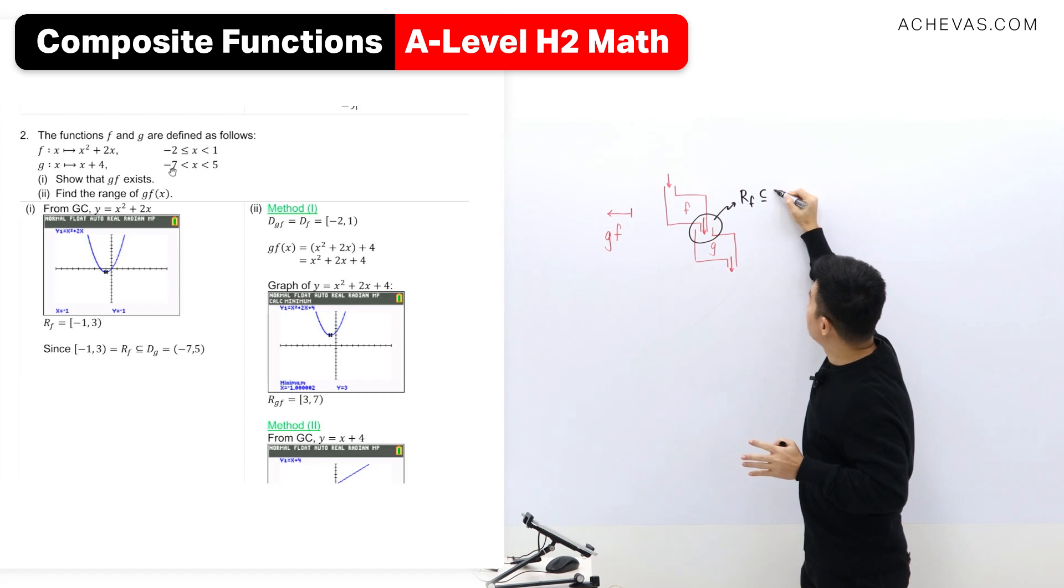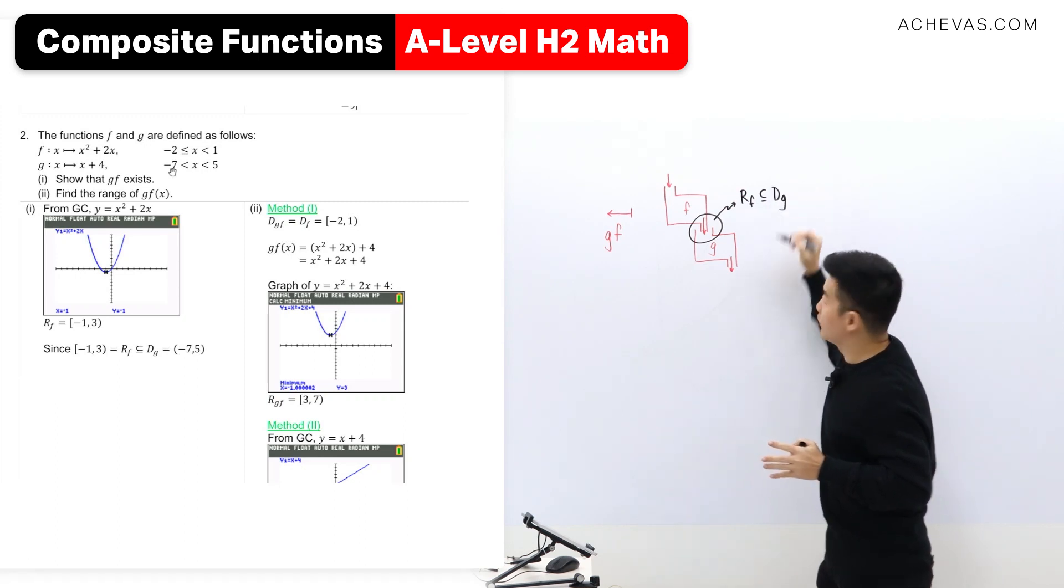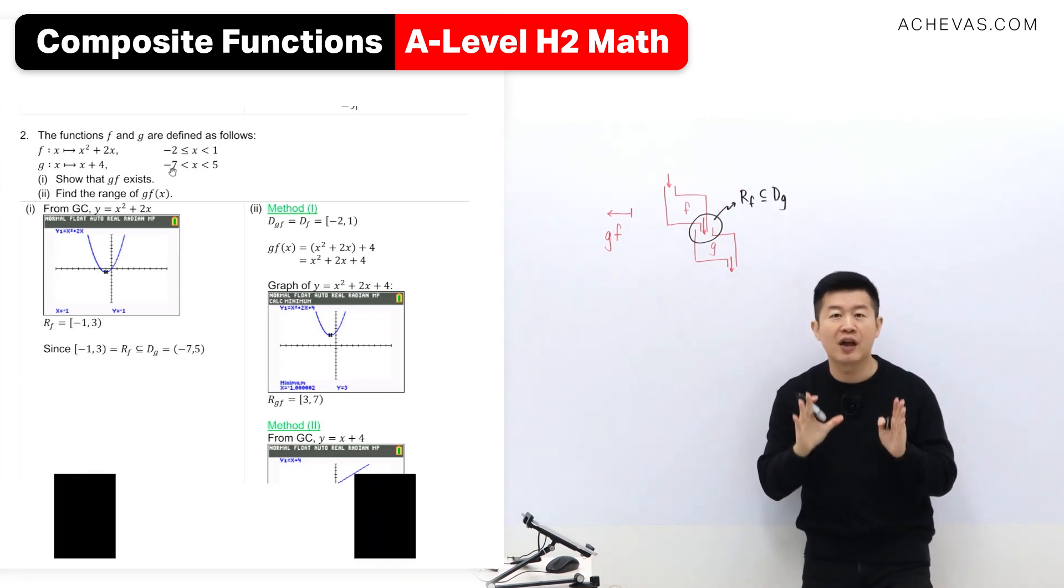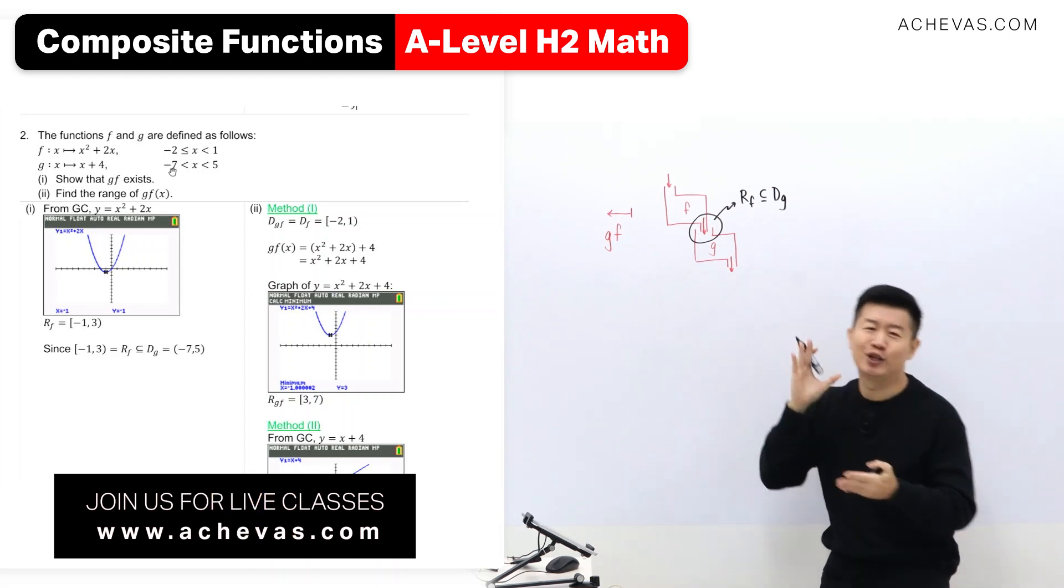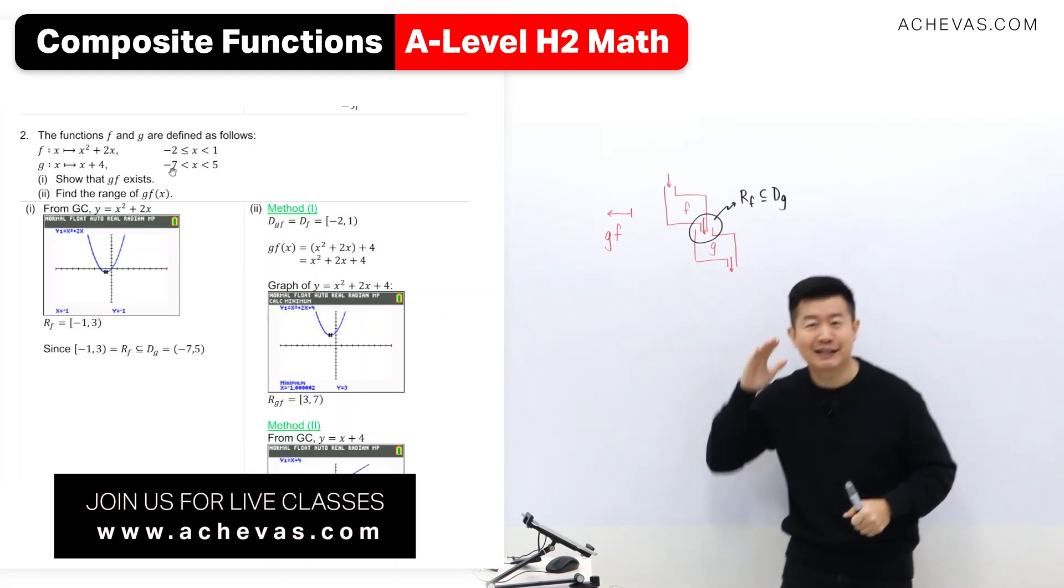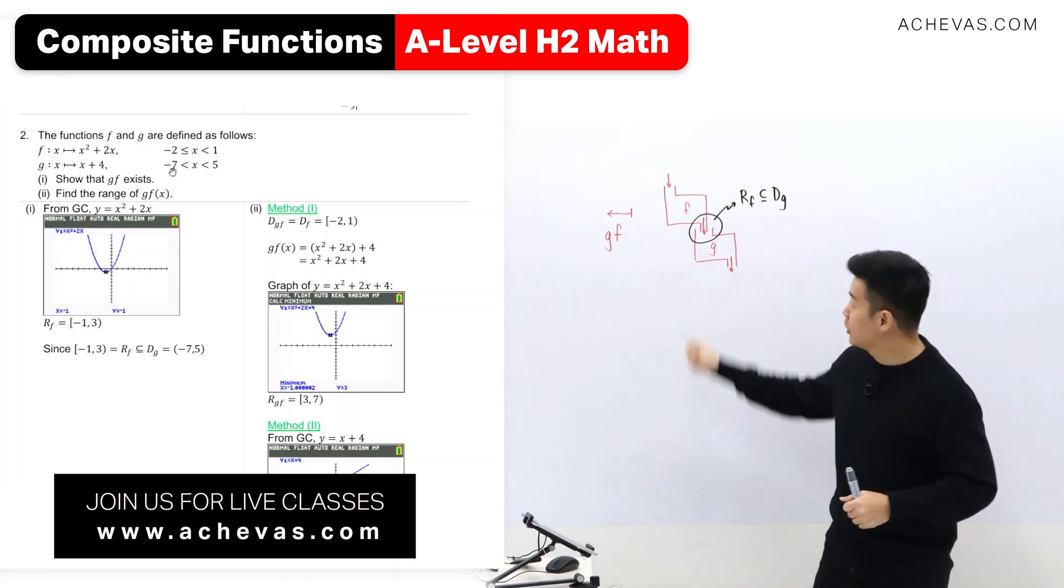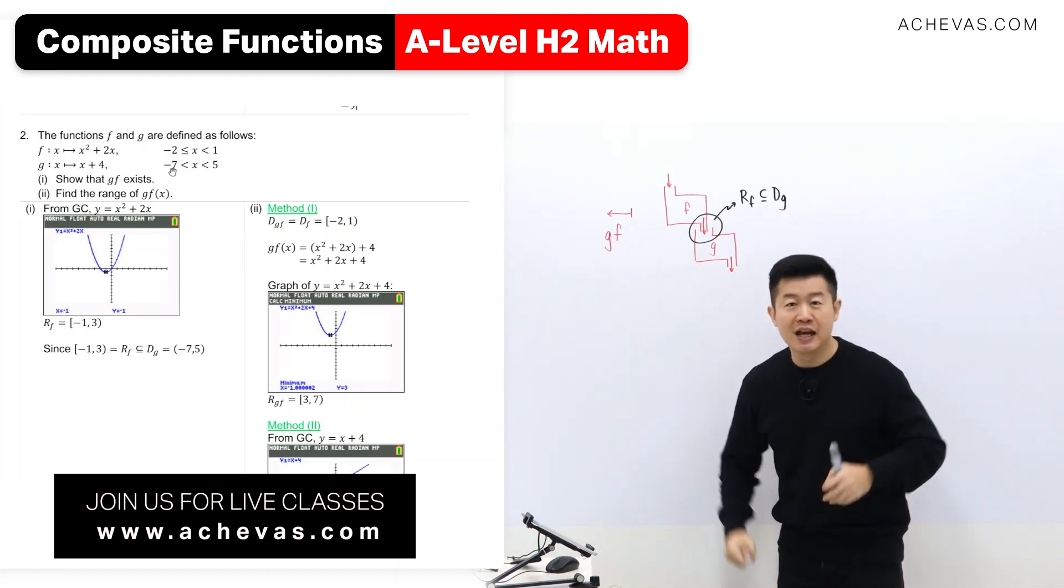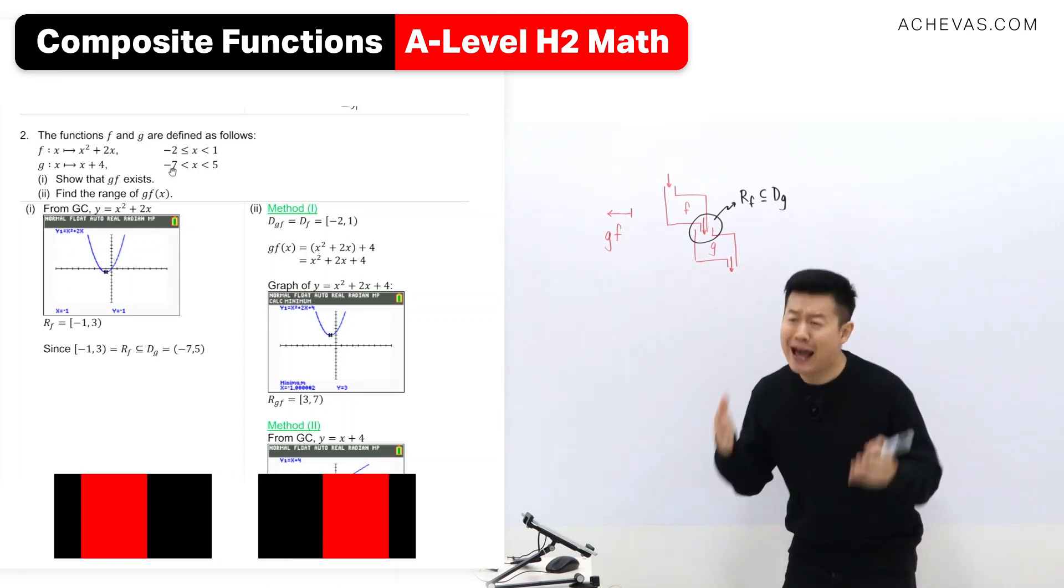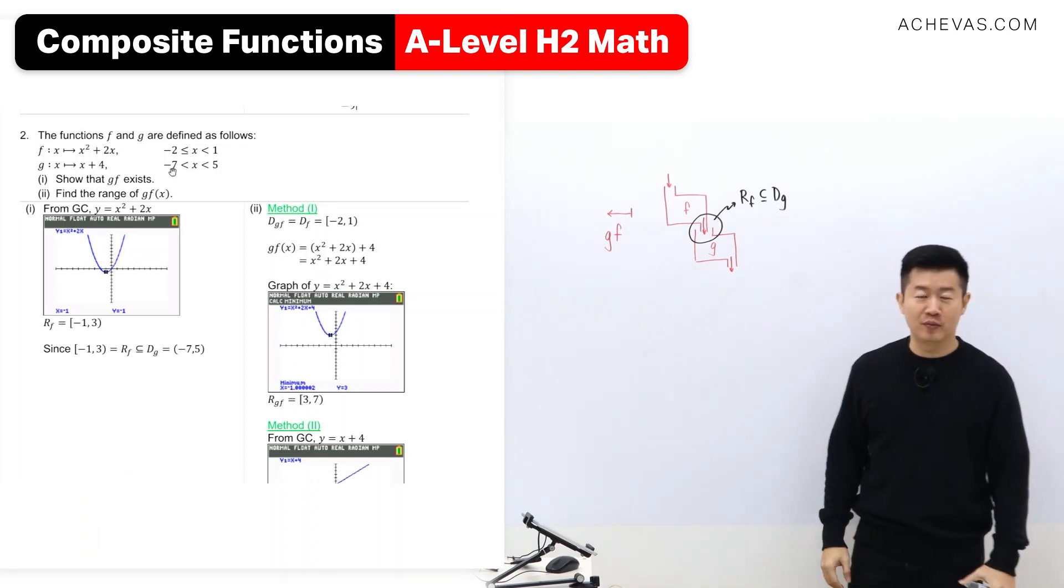So the range of F must be a subset of the domain of G. And I want to make sure that this is very clear. It is logical—it's not because I've memorized something, but it is logical that in order for the composite function GF to exist, the range of F has to be a subset of the domain of G.